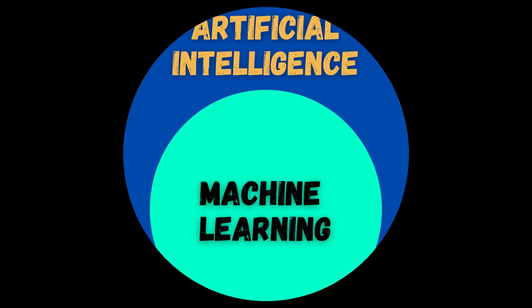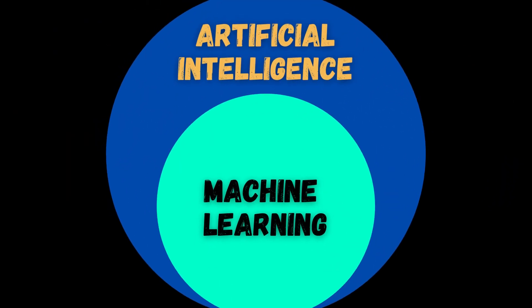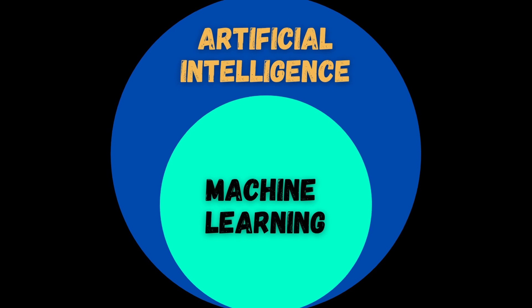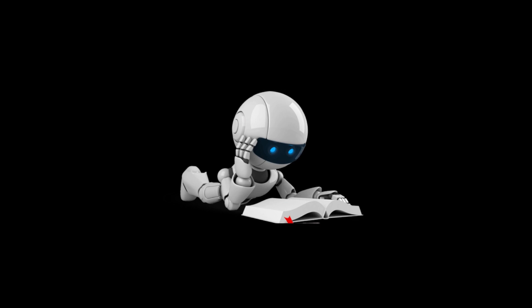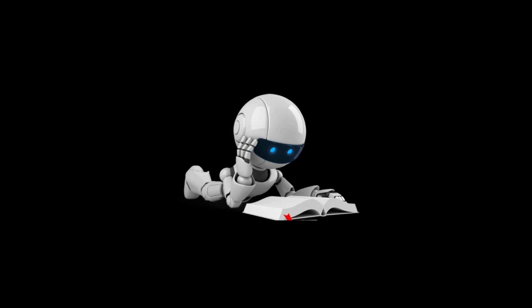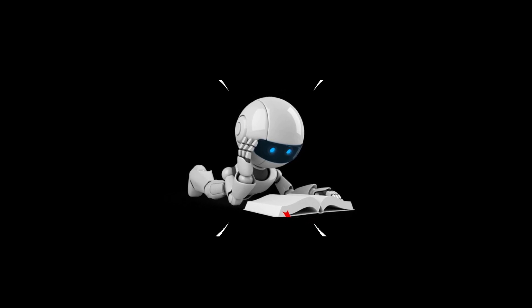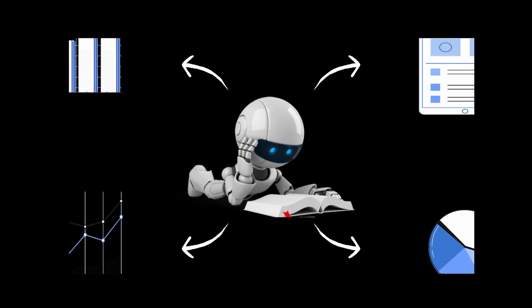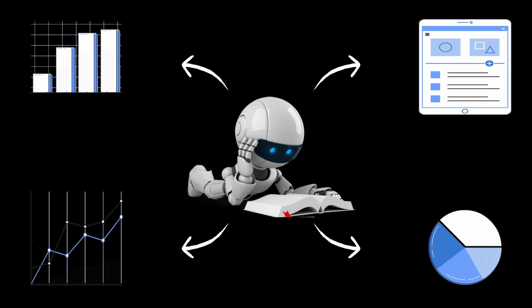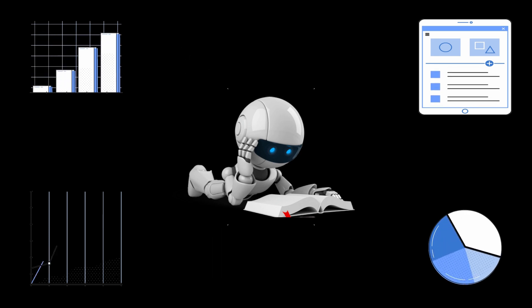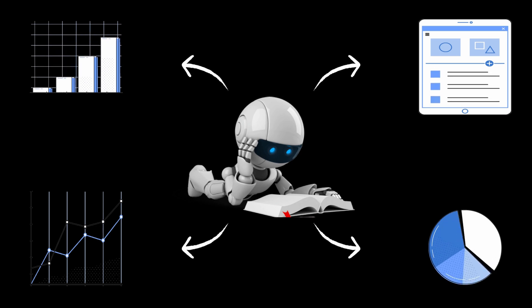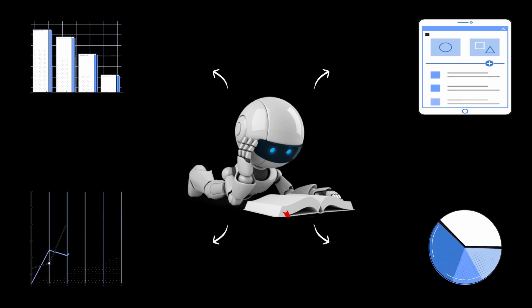Machine learning is a subset of artificial intelligence that provides computer systems with the ability to learn and improve from experience without being explicitly programmed. This allows computer programs to learn automatically from the data without human intervention by extracting patterns from the given data. Let's look at the different machine learning methods to get a more detailed understanding.